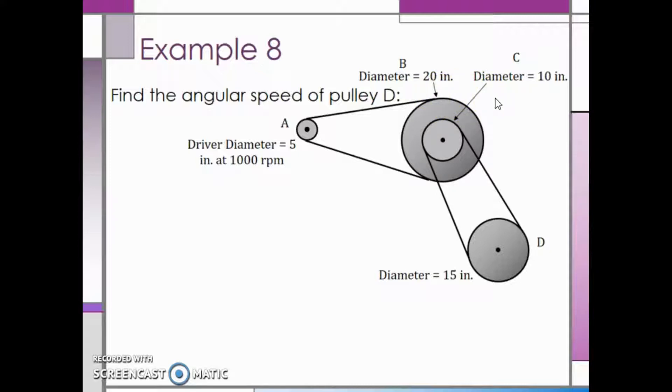First, let's set up what we will need to multiply. The speed of pulley D is equal to the speed of pulley A multiplied by the diameter ratios for each belt.